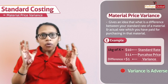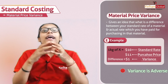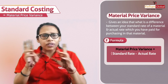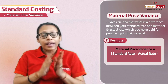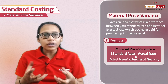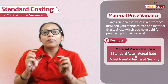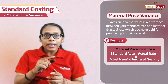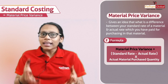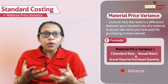Now we know the concept of material price variance — it is the difference between standard rate and actual rate. The formula is: (Standard Rate minus Actual Rate) multiplied by Actual Quantity purchased. That is how we calculate the material price variance. If it is adverse, it is not good for the organization — they have to rework and investigate the reasons.